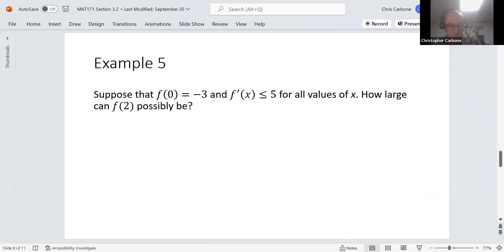For Example 5, suppose that f(0) = -3 and f'(x) ≤ 5 for all values of x. We want to know how large can f(2) possibly be. Based upon what we know, at least the limited information, we can tell that f is differentiable and continuous.